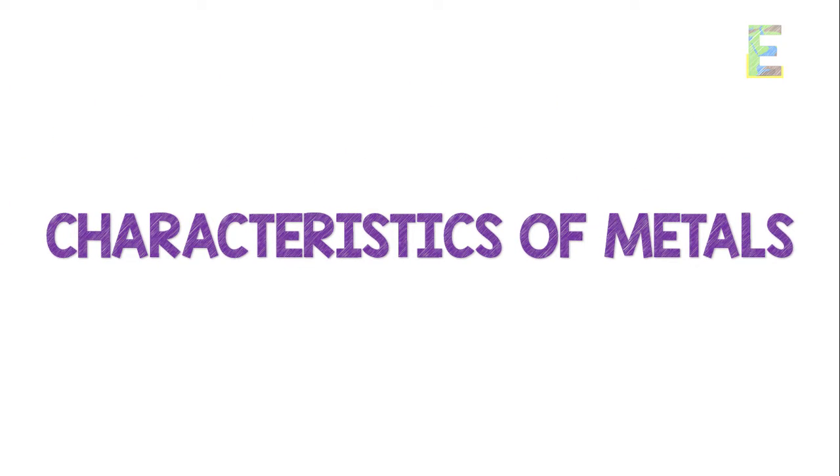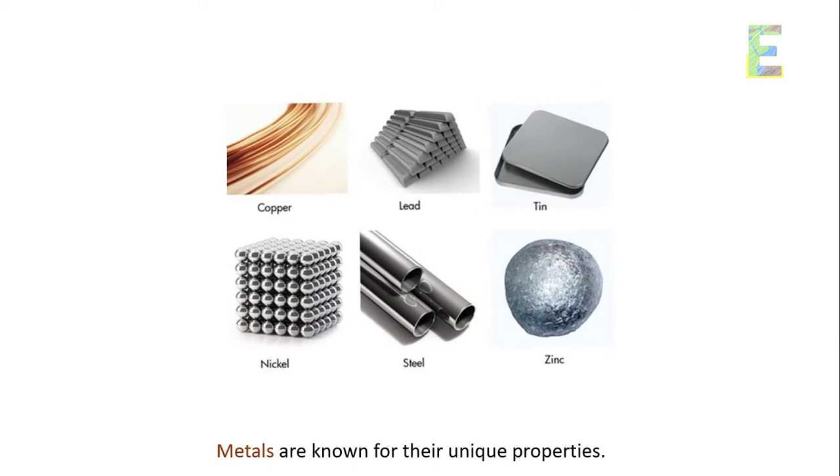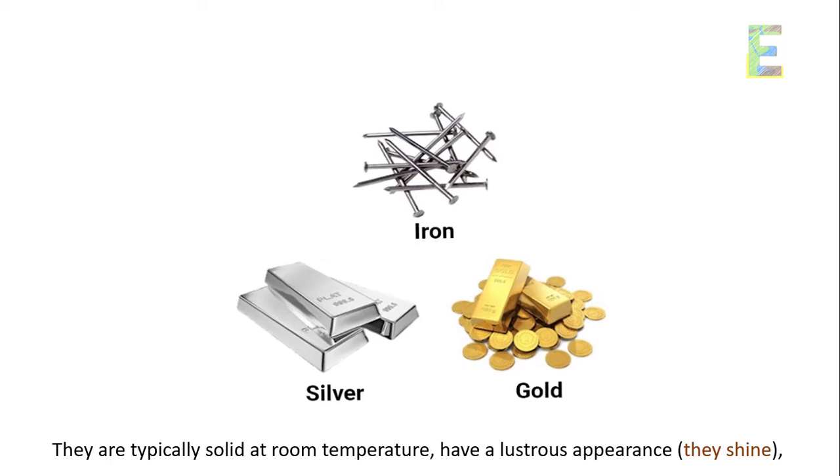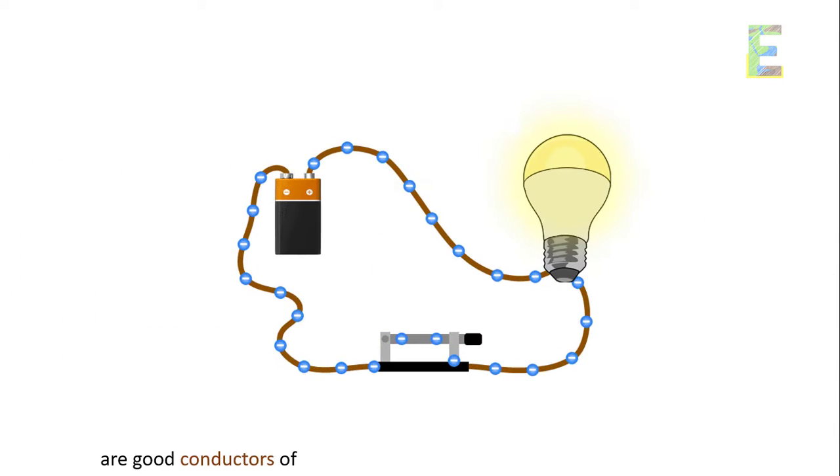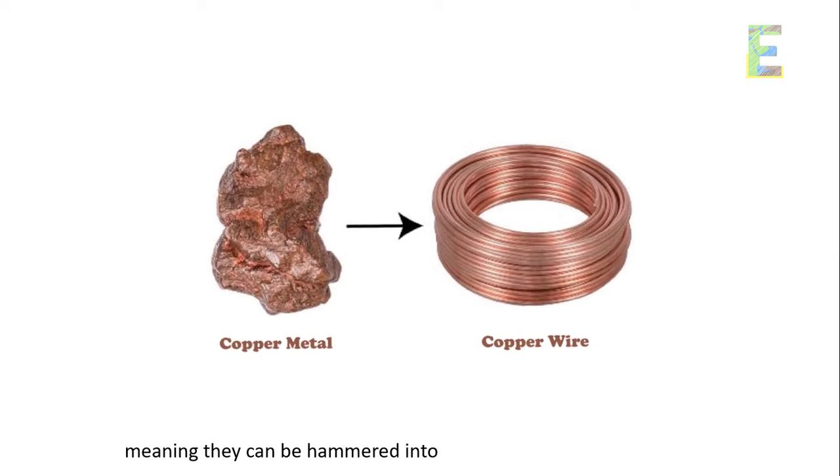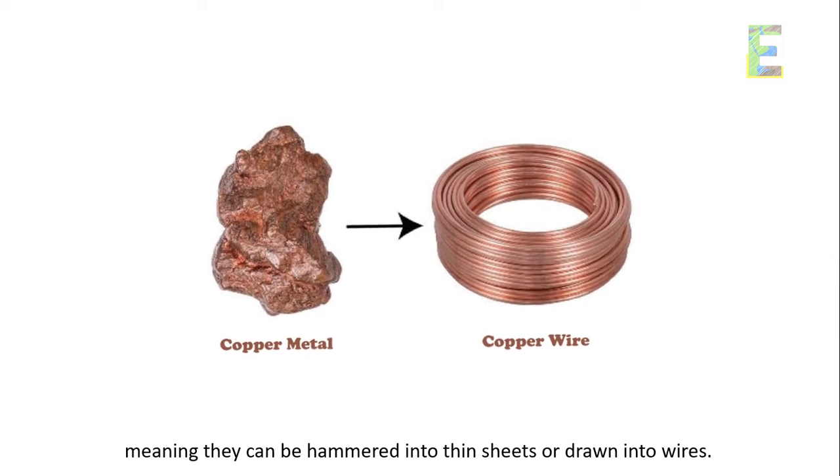Characteristics of metals. Metals are known for their unique properties. They are typically solid at room temperature, have a lustrous appearance, are good conductors of heat and electricity, and are malleable and ductile, meaning they can be hammered into thin sheets or drawn into wires.